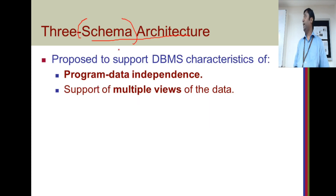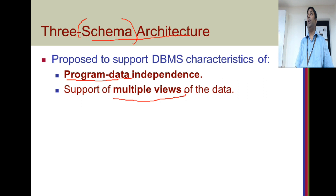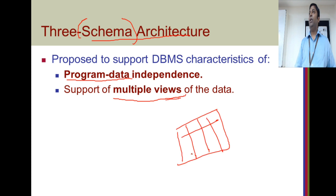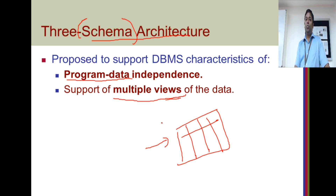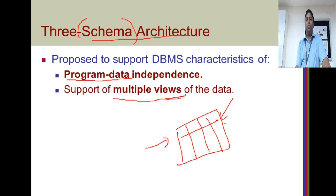The three schema architecture was proposed to support two important things: program-data independence and multiple views of the data. For instance, you have a faculty table. Students can view only the faculty name and phone number — they should not be able to view the salary or other details. Whereas, the supervisor of the faculty should be able to view all the other details. So, multiple views on the data — that is how three schema architecture supports this.